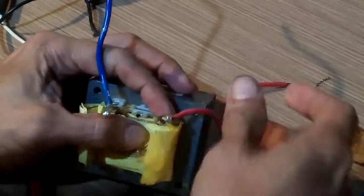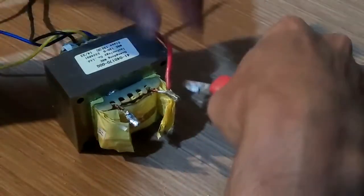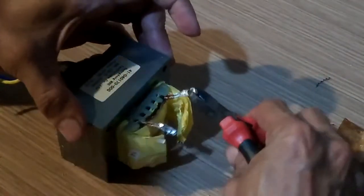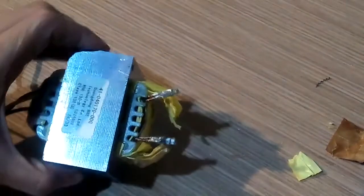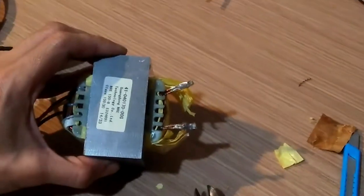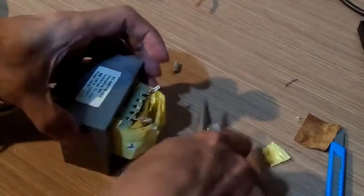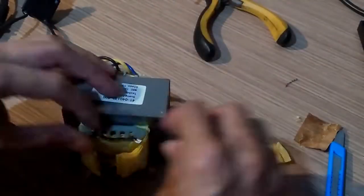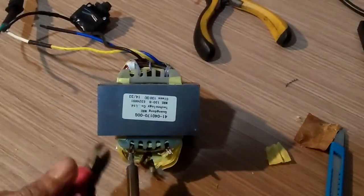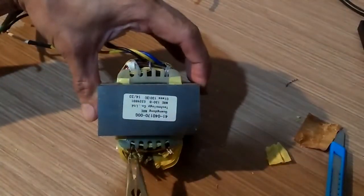The way these transformers are made is that there are two secondary windings connected in parallel to increase the current capacity of the output. What we need to do is to separate those two sets of windings and reconnect them in series. As you can see, I desolder these ends to separate those wires.